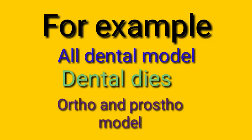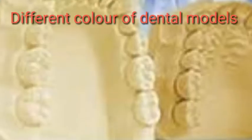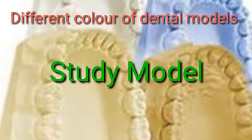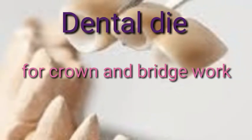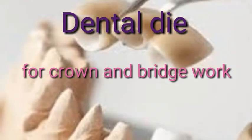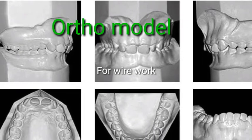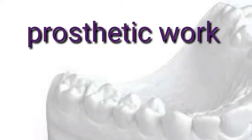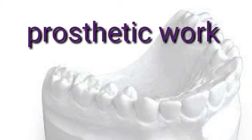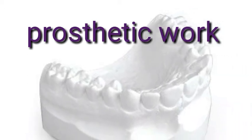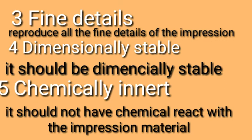For example, all dental model dies, orthodontic and prosthetic models are made from dental plasters. Here are some examples of different colors of dental models and dies. Number three, fine detail reproduction — the model must reproduce all the fine details of the impression. Number four, dimensionally stable — it should be dimensionally stable.